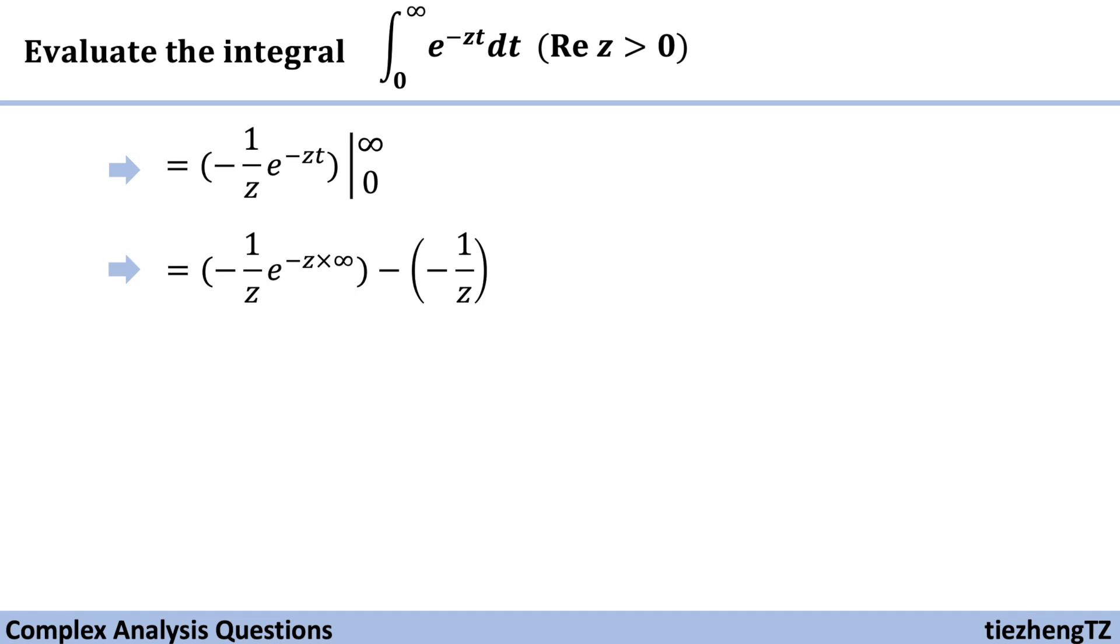Because e to the power of zero is 1. Let's do a simple transformation: e to the power of minus z times infinity is equal to 1 over e to the power of positive z times infinity.